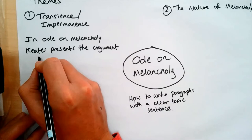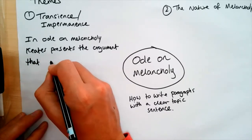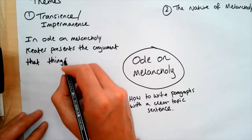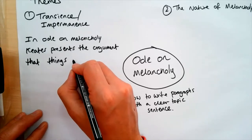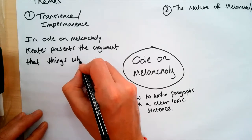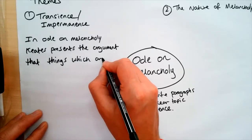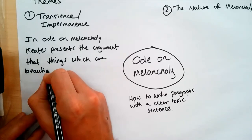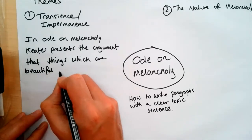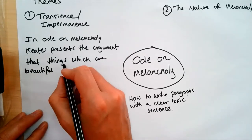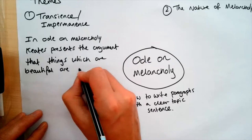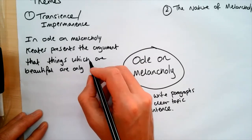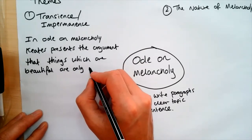So for the first topic sentence, I've focused on the theme of transience and impermanence and explained how the poet has presented this in the poem. You'll notice I haven't listed techniques that they've used or said that they've used words to do this — you don't need to do that at this stage.